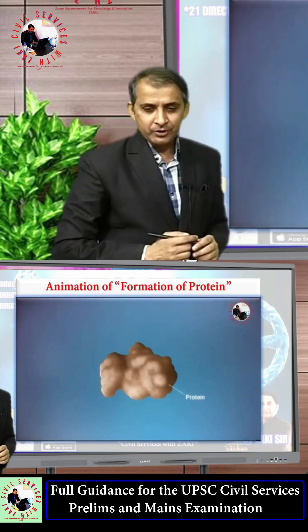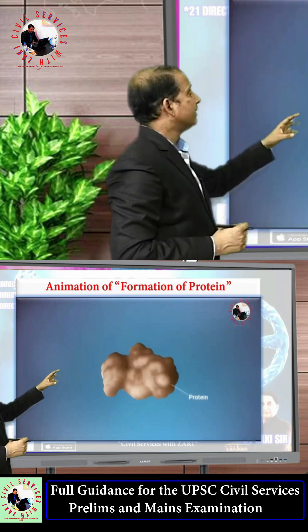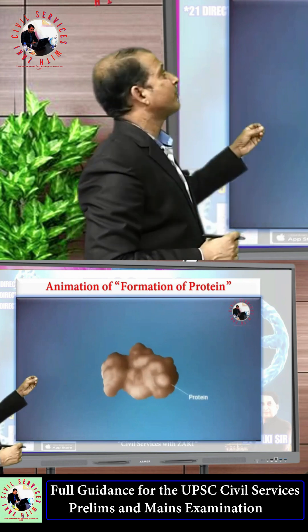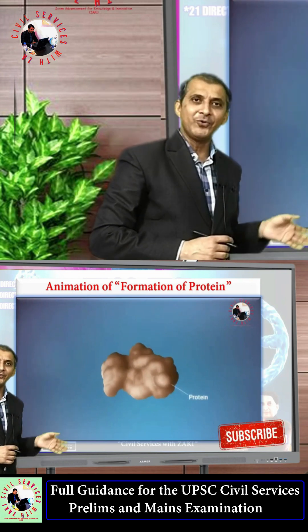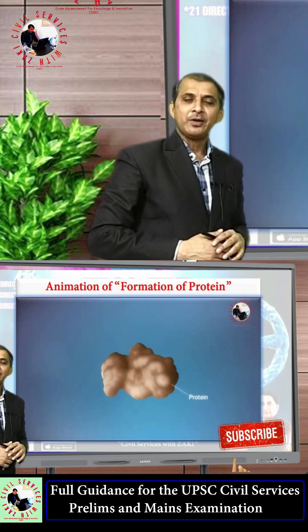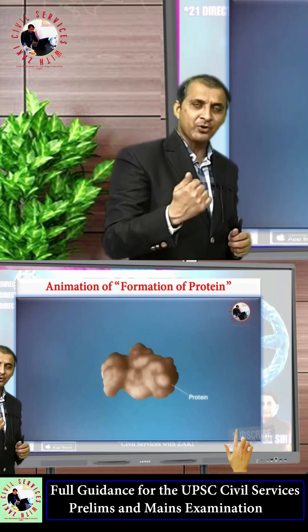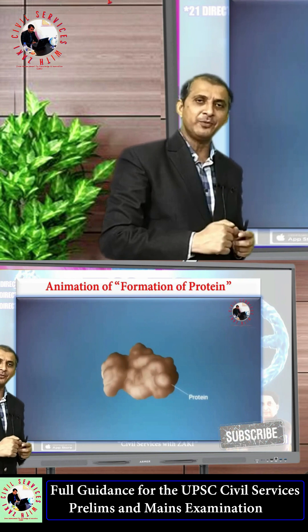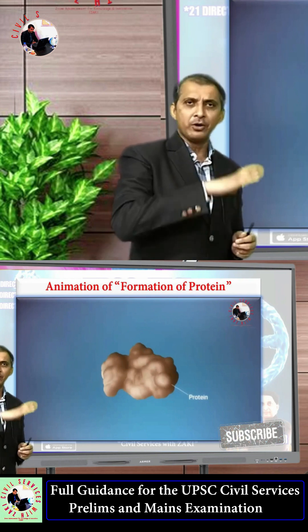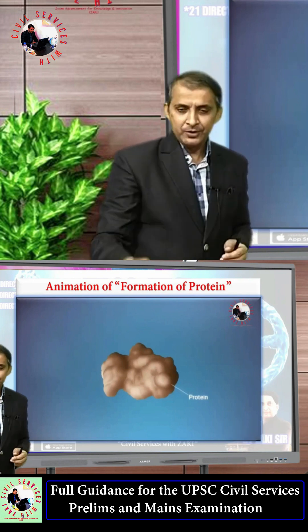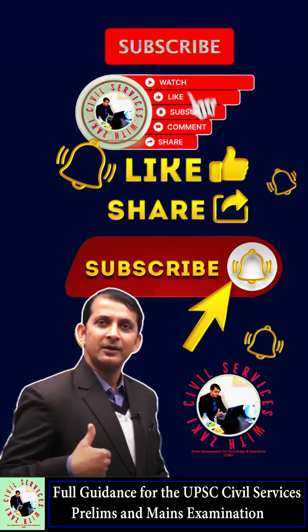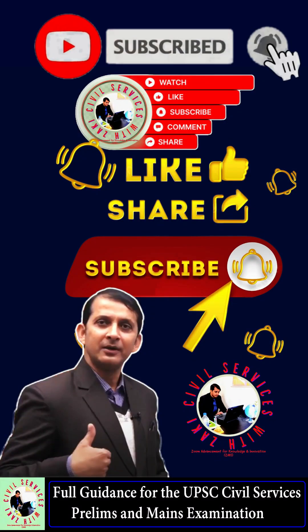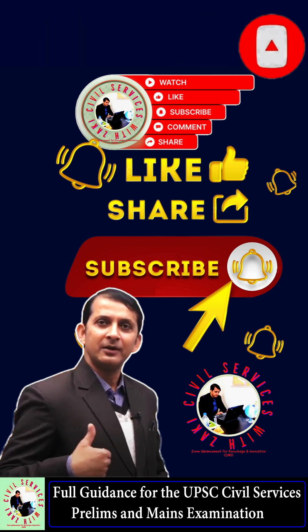The ribosome produces amino acids, and when 20 amino acids are completed, they form a protein. These proteins play a very vital role in life processes in human beings and all organisms.